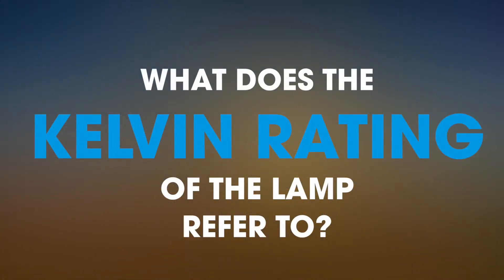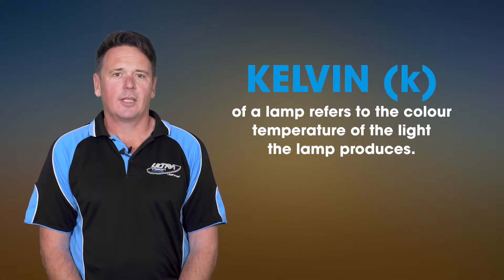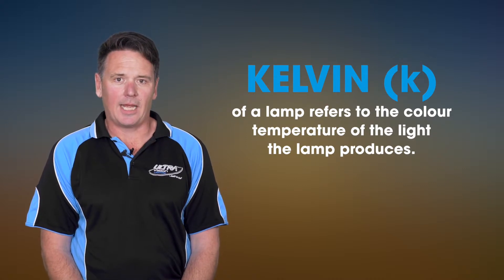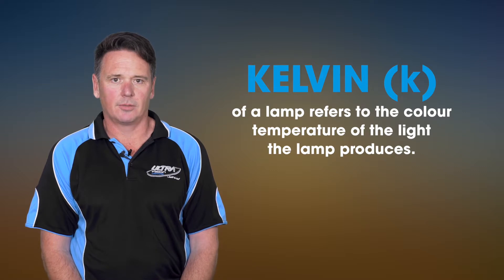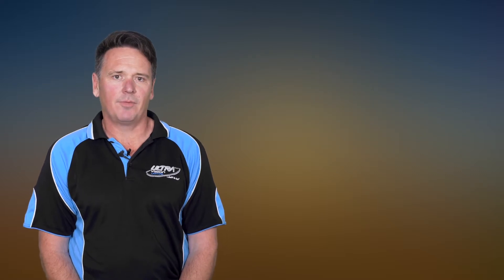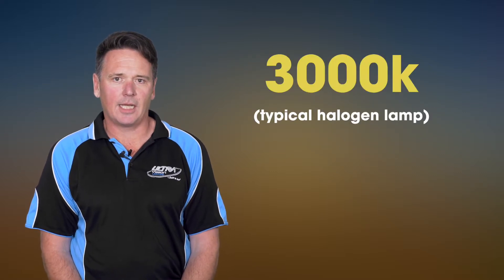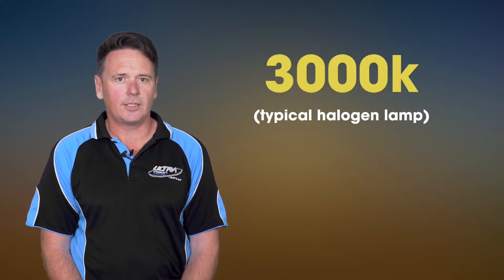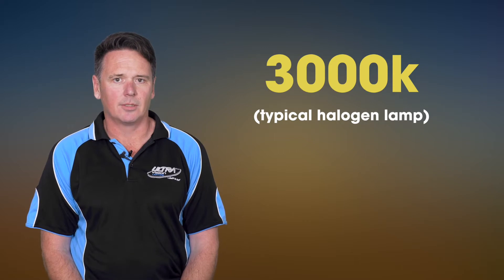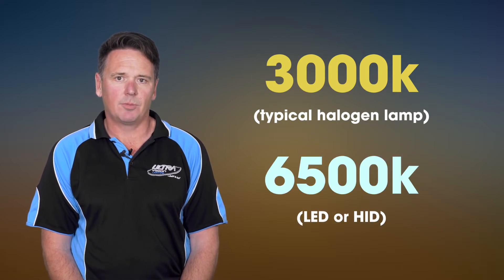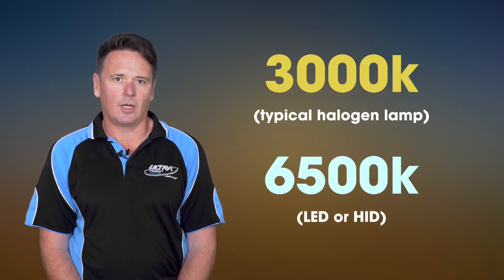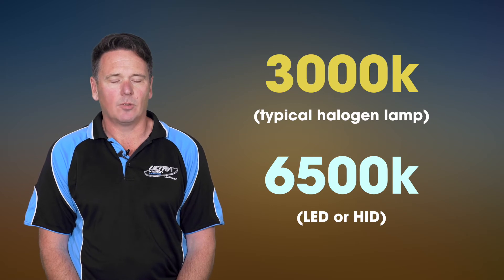What does the Kelvin rating of the lamp refer to? The Kelvin, or K, of the lamp refers to the color temperature of the light that the lamp produces. This can vary from 3000K, which is quite yellow like the typical halogen, to 6500K, which is the blue-white of the LED or HID.